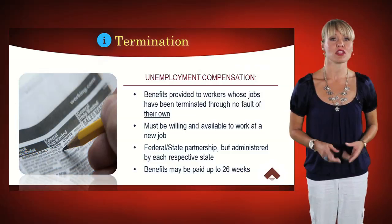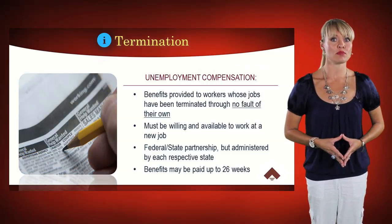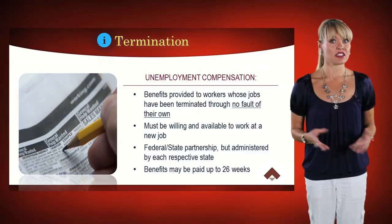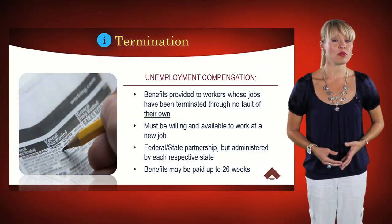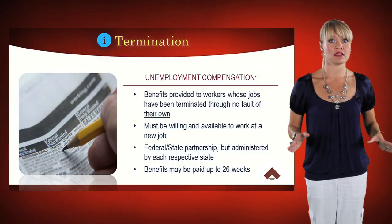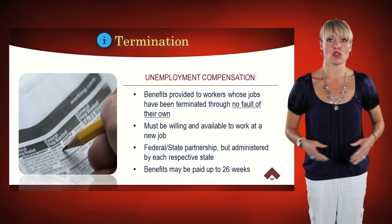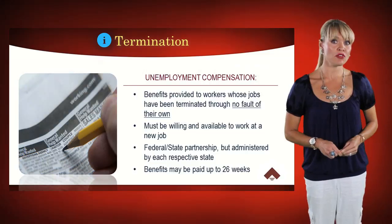Next, you should know about wrongful termination. Being terminated for any of the following may constitute wrongful termination. Number one — discrimination: the employer cannot terminate employment because the employee is a certain race, nationality, religion, sex, age, or in some states, sexual orientation. Number two — retaliation: an employer cannot fire an employee because the employee filed a claim of discrimination or is participating in a discrimination investigation; this retaliation is forbidden under civil rights law. Number three — employee's refusal to commit an illegal act: an employer is not permitted to fire an employee because the employee refuses to commit an illegal act.